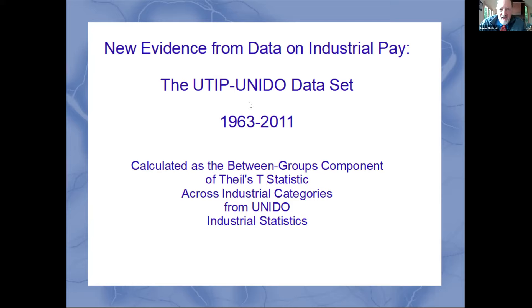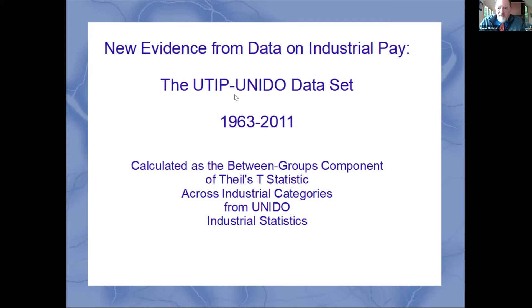We developed a global dataset covering up to 2014, though updating will be a challenge as I've run out of students. The total scale of the dataset is now 154 countries with more than 4,000 separate country-year observations, each computed from information specific to that country and year — no imputation across countries or years. This is a major difference from the SWIID dataset of Frederick Solt at the University of Iowa. It's much more comprehensive than the OECD, the Luxembourg Income Study, or even the World Bank, which is restricted to what member countries actually report.